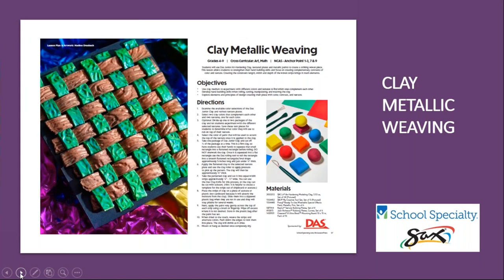Our next lesson is a clay metallic weaving — one of my own lessons sponsored by DAS. I used DAS Junior air-dry hardening clay, texture plates, and metallic paints to create a woven piece. This lesson allows students to strengthen their hand-building skills and focus on creating complementary contrast, color, and texture. Creating consistent length, width, and depth of the woven strips brings in math elements and hand skills. I used a leaf pattern and a tree bark pattern with green and brown clay. The clay has a rubbery feel, so I stored strips in a plastic bag to keep them moist and pliable enough to weave when finished.